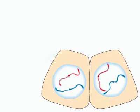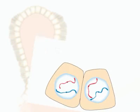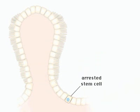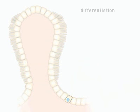Eventually, the stem cell undergoes cell cycle arrest and begins the differentiation process. The cell migrates up the villus and becomes an enterocyte.